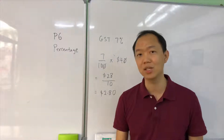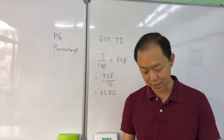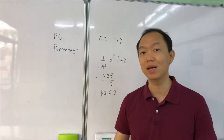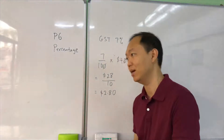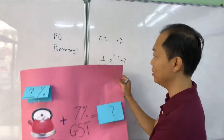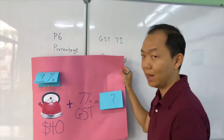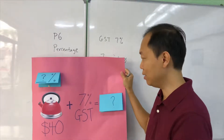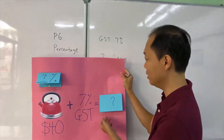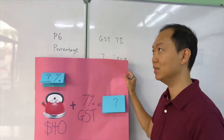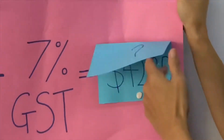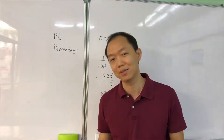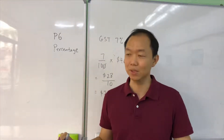So the 7% GST is $2.80. The question now is: what is the price of the cattle after adding GST? The answer is $42.80, and that's correct. You do one demonstration and then get them to do the rest — simple.